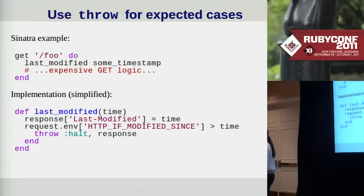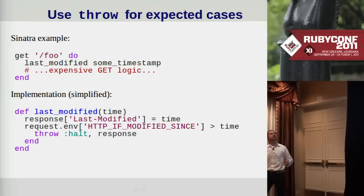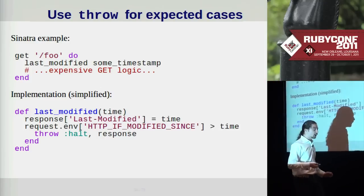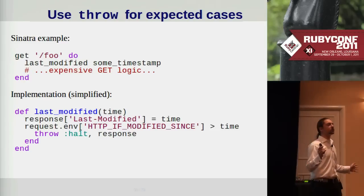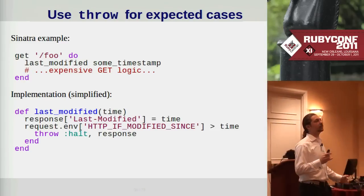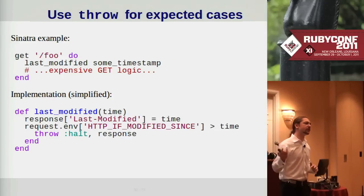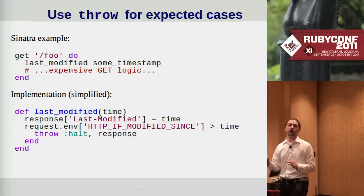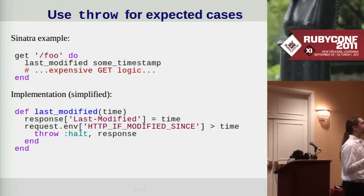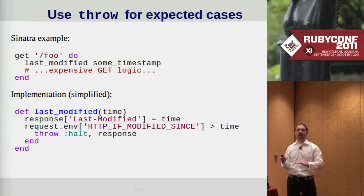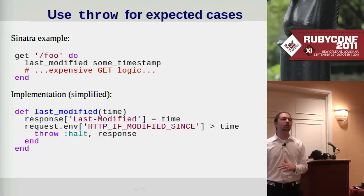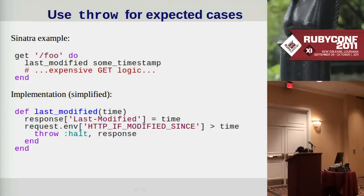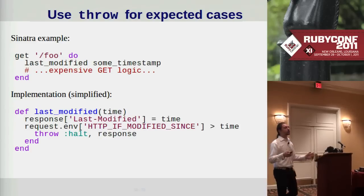If you have a case where you really do want to break out multiple levels of execution the way an exception does, but it is not an exceptional or unexpected case, Ruby has a construct just for that — it's called throw and catch. A lot of people coming into Ruby confuse that with raise and rescue. This gives us a way that is not part of the exception system at all to bomb out of a piece of code and go up to a higher level. You can see an example of this in Sinatra: last_modified checks if the browser has the latest version, and if so it throws the halt symbol, which a middle layer higher up catches to end the request, avoiding expensive further processing.